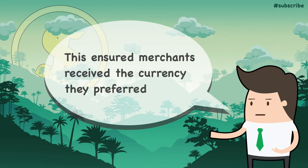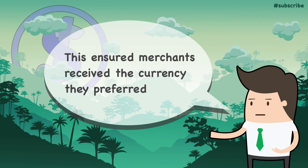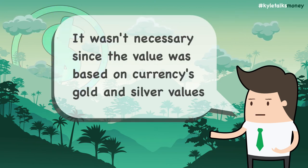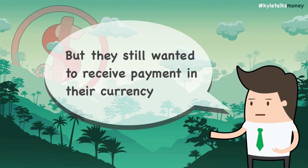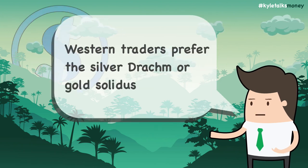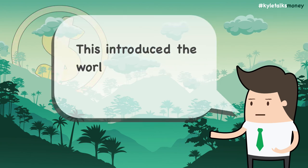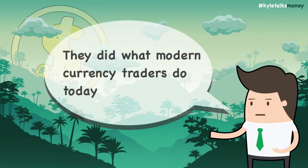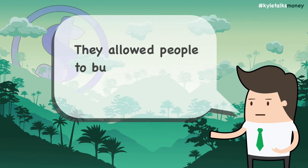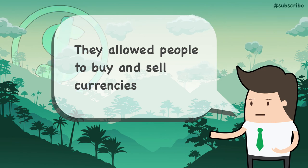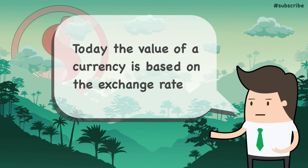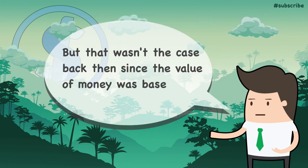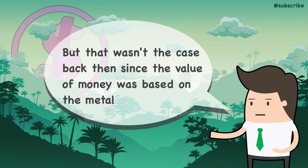Traders would exchange currency with each other to have the appropriate currency when trading with merchants from different regions. This was not strictly speaking necessary since the coins were made out of precious metals and their worth was determined by their gold or silver value. Many traders nonetheless preferred to trade using currencies that were widely circulated in their part of the world. For example, Western traders preferred the silver drachma of the Neo-Persians or the gold solidus of the Byzantine Empire, and Eastern traders preferred Chinese currency. This introduced currency brokers, who filled a function similar to what currency traders do today, helping facilitate trade between different countries and cultures. Today these brokers also facilitate currency speculation and foreign exchange trading based on exchange rates — something not possible during the Silk Road era since currency values were fixed to the metals they were made of.